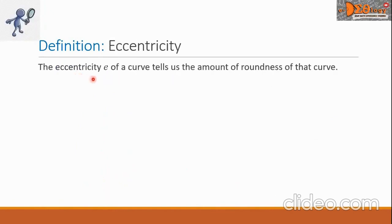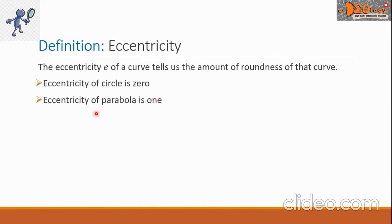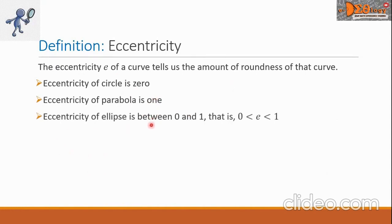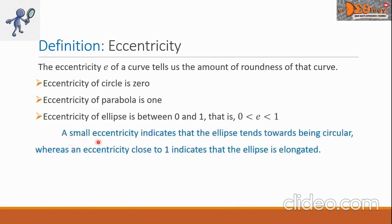The eccentricity, denoted by E, of a curve tells us the amount of roundness of that curve. Take note that the eccentricity of a circle is zero, the eccentricity of a parabola is one, and the eccentricity of an ellipse is between zero and one. Remember, a small eccentricity indicates that the ellipse tends towards being circular, whereas an eccentricity close to 1 indicates that the ellipse is elongated.